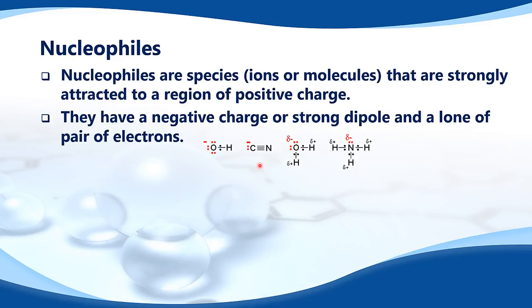Here are some examples of nucleophiles. Starting with the hydroxide ion, OH negative, it has the negative charge on the oxygen and the lone pairs of electrons. Next is the cyanide ion, it has a negative charge on the carbon and the lone pair of electrons.